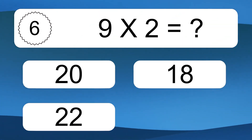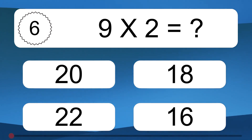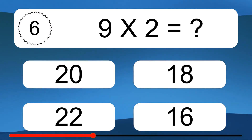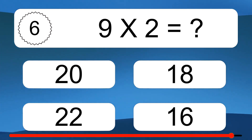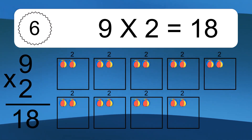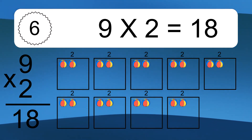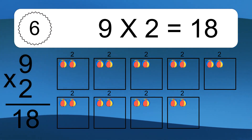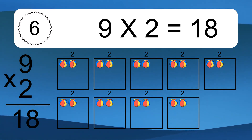9 times 2 equals what? 9 times 2 equals 18. We have 9 boxes, and each box has 2 colorful balls inside. If you count all the balls in all the boxes together, you will have 9 times 2 balls. This equals 18 balls.